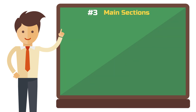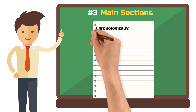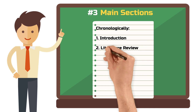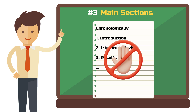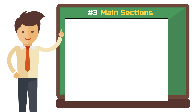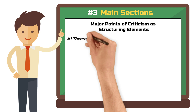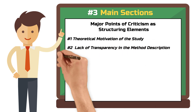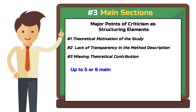Step 3: Main sections of your peer review report. There are two ways to structure the main body of your review. You can go chronologically through the paper and provide feedback on each section, such as introduction, literature review, results, and so on. However, this is not the way the real pros do it. I recommend using your major points of criticism as structuring elements — for example: point one, the theoretical motivation of the study; two, lack of transparency in method description; and three, missing theoretical contribution. You may have five or six main points of criticism, but no more, and these should be equally weighted — write a similar amount of text for each.